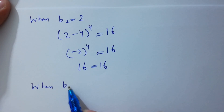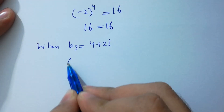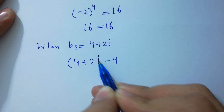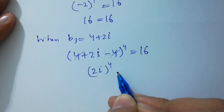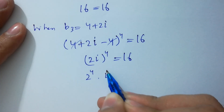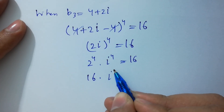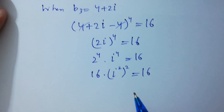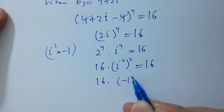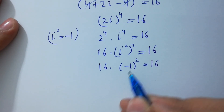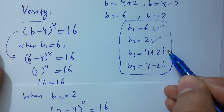When b₃ = 4+2i, put the value: (4+2i−4)^4 = (2i)^4 = 16. The 4's cancel leaving (2i)^4 = 2^4 · i^4 = 16 · (i²)² = 16 · (−1)² = 16 · 1 = 16. So 16 = 16, which confirms b₃ = 4+2i is correct.